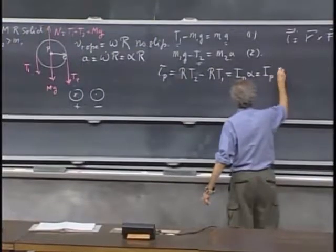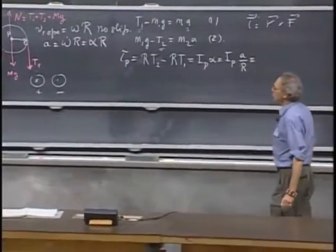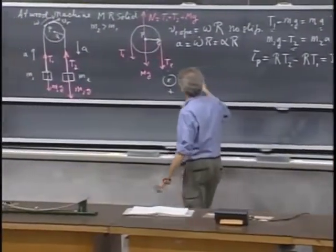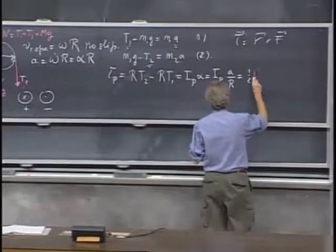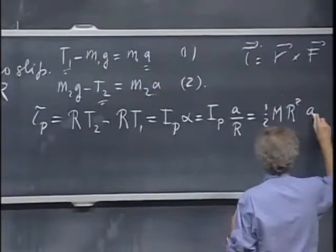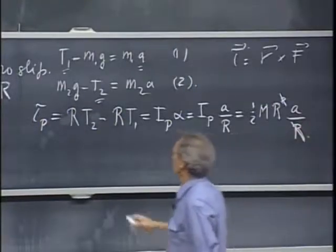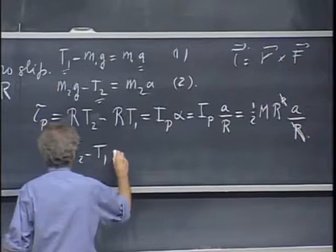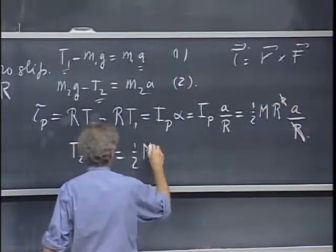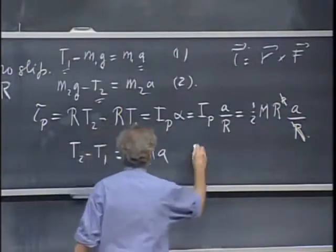so it's the moment of inertia about point P times a divided by r. But since it is a rotating disk which is rotating about its center of mass, I know the moment of inertia. That is one-half m r squared, one-half m r squared times a divided by r, and I lose one r, and so I find then that T2 minus T1 equals one-half m a. Notice I also lose my second r.